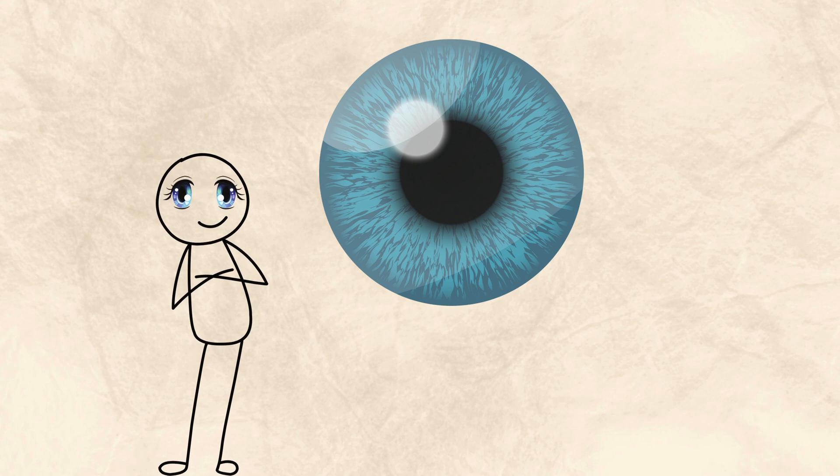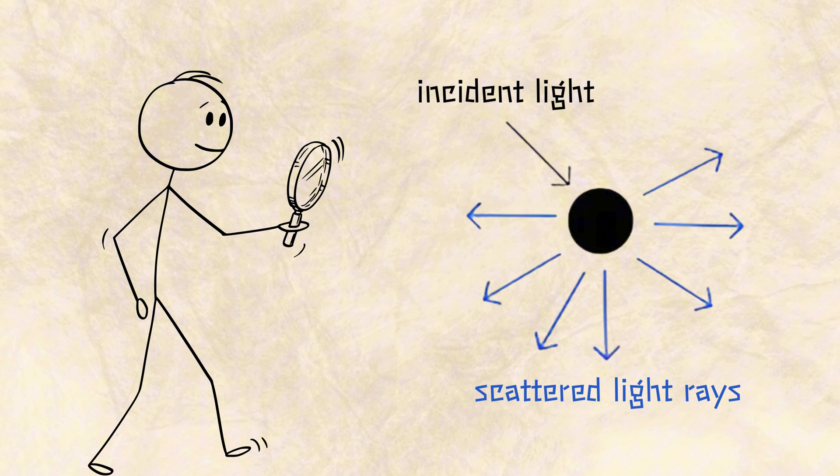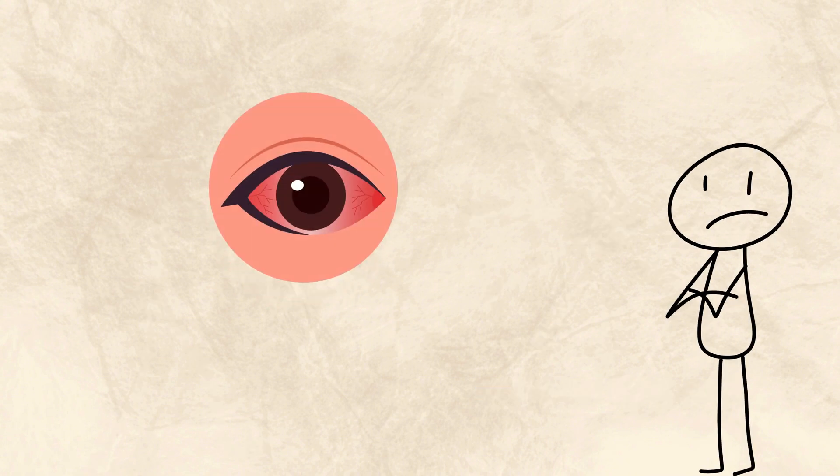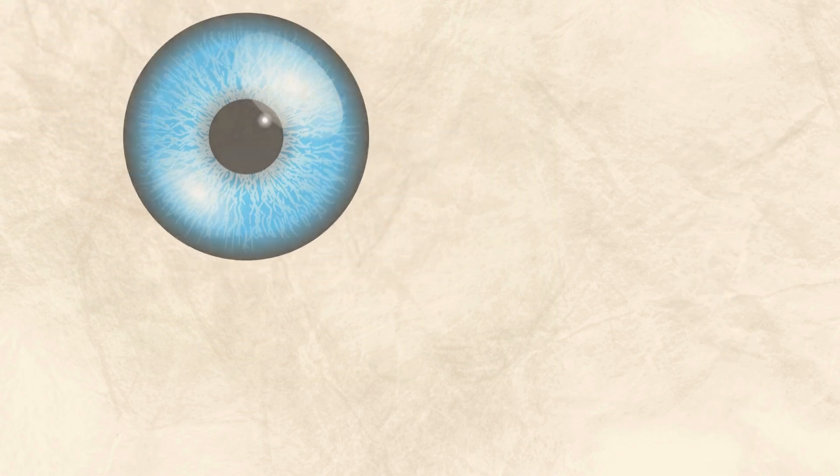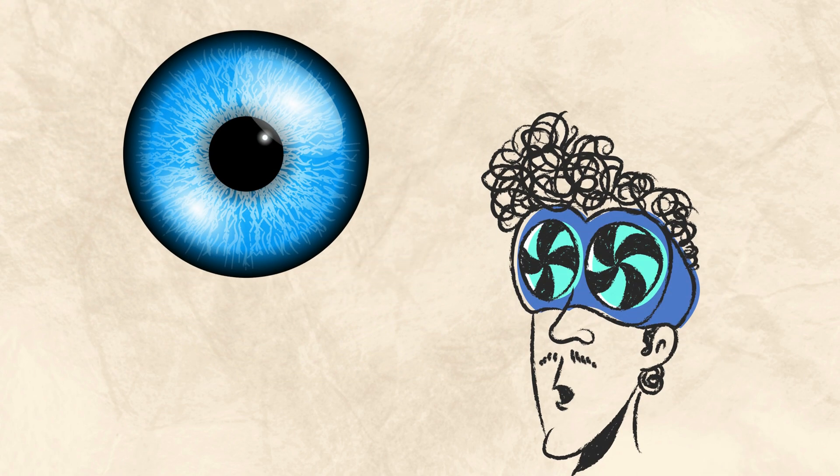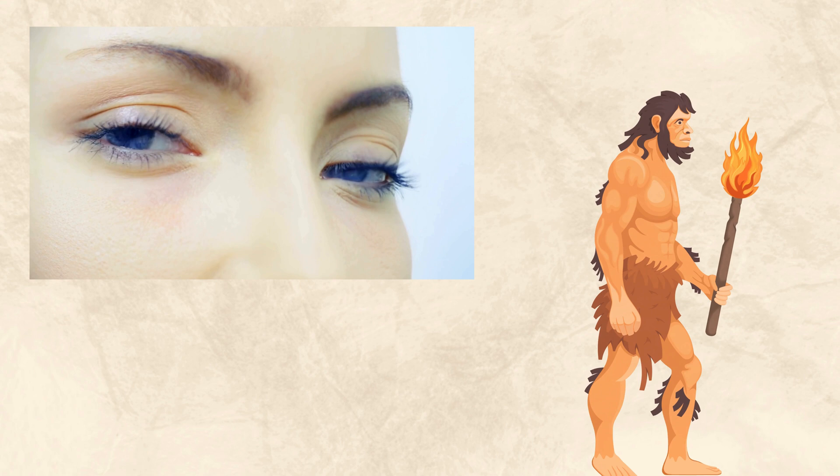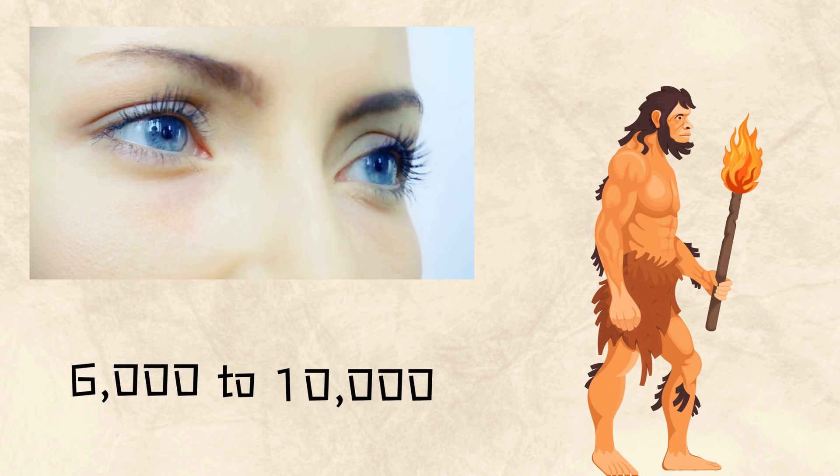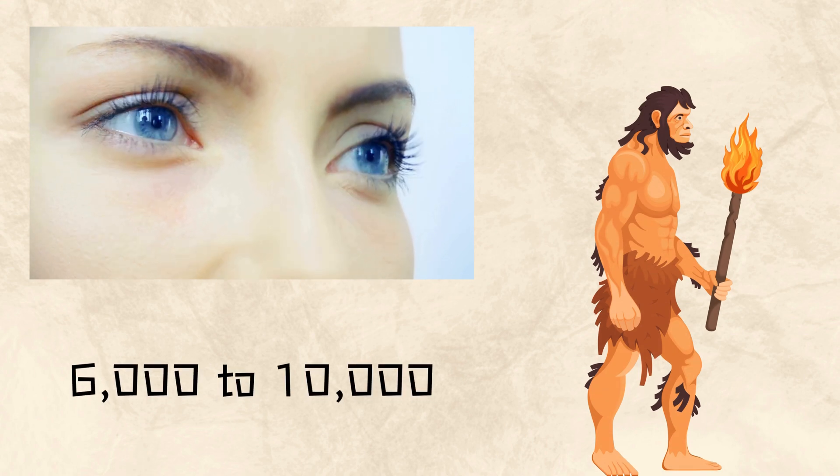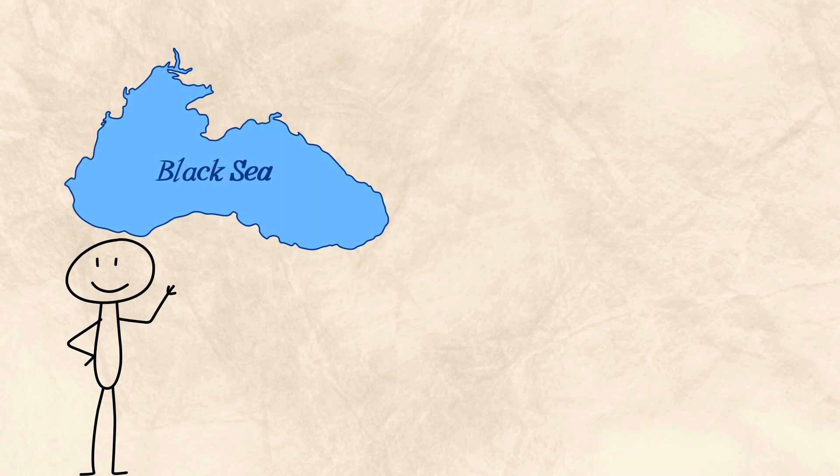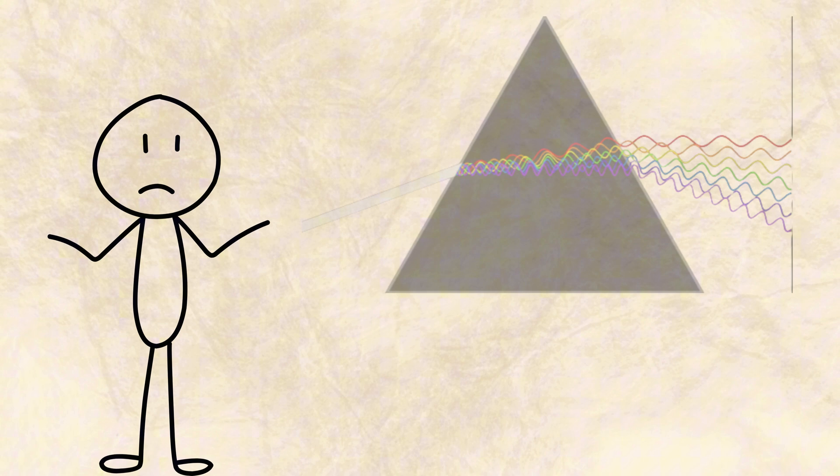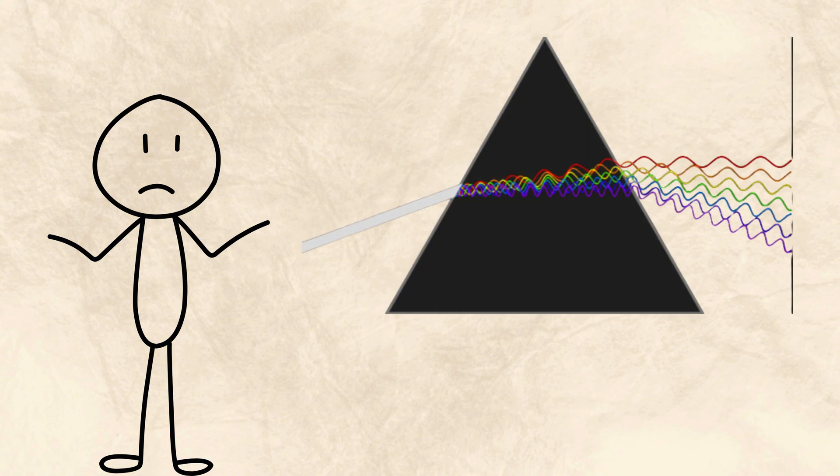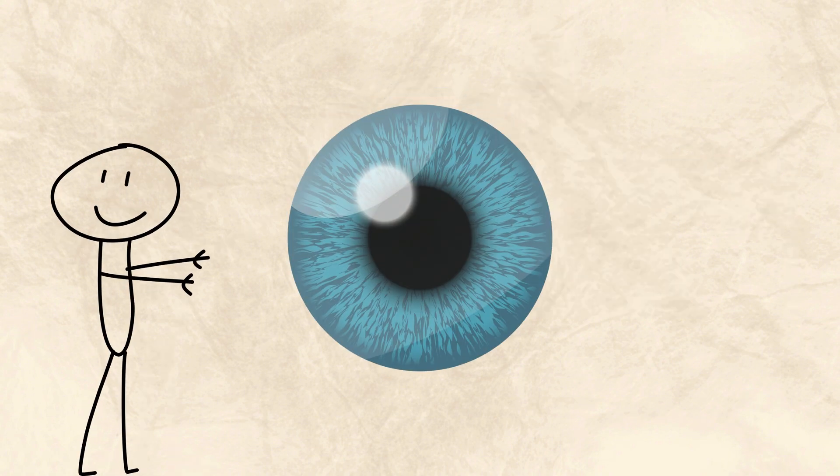Blue eyes have no blue pigment. What you see is scattered light. The iris has very little melanin, so when light enters, shorter blue wavelengths bounce back. This scattering creates the illusion of blue. All blue-eyed people share a common ancestor from about 6,000 to 10,000 years ago. A small mutation near the Black Sea reduced melanin. That one change allowed light to scatter instead of being absorbed, and so blue eyes began.